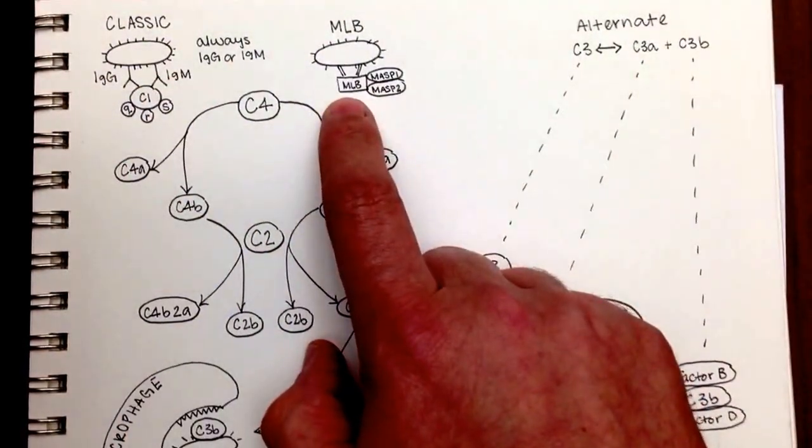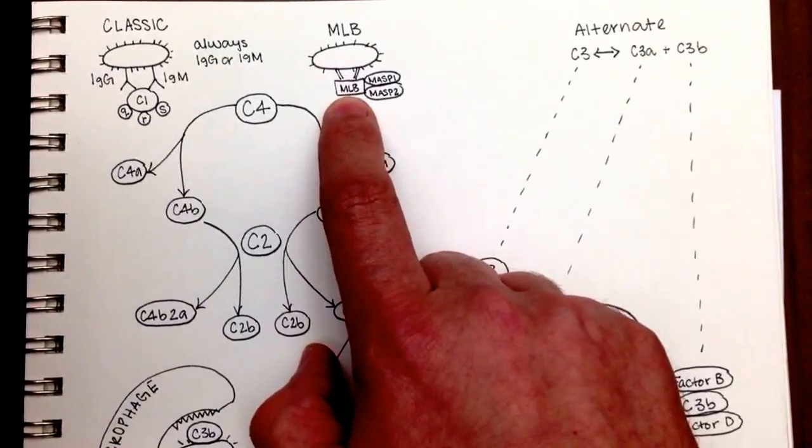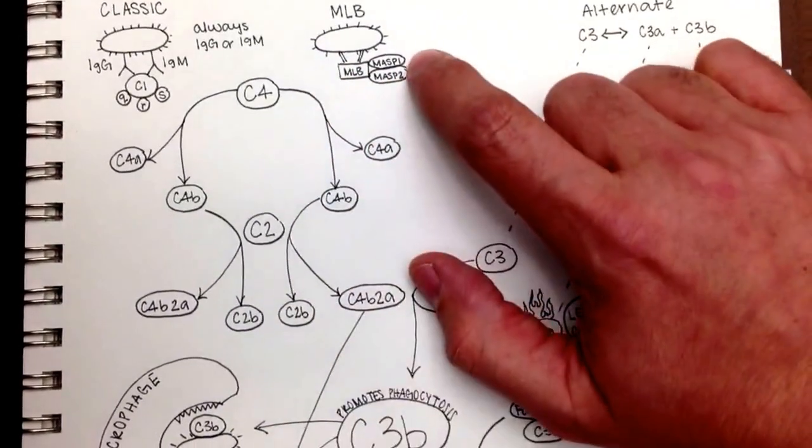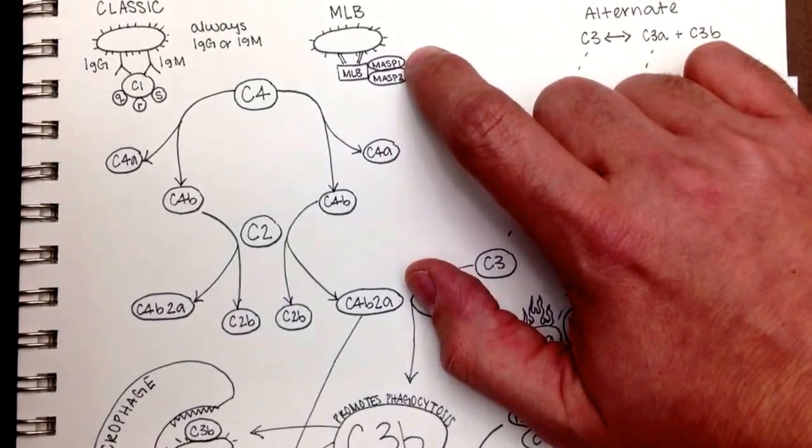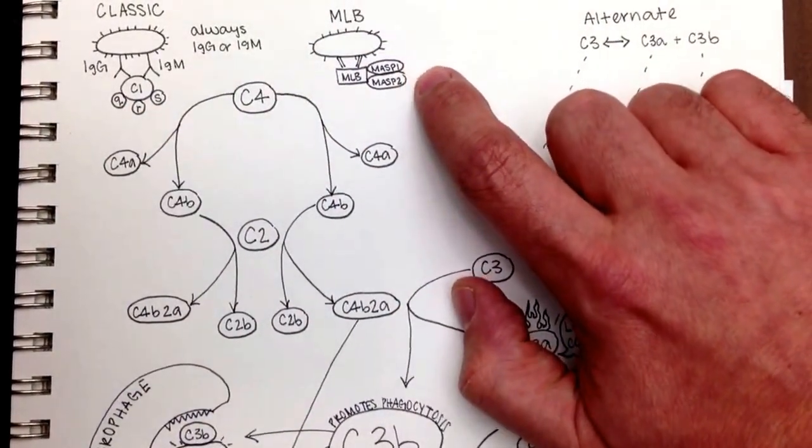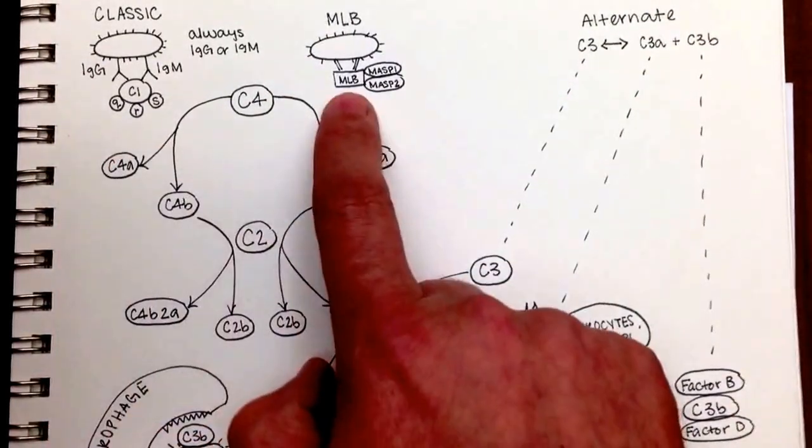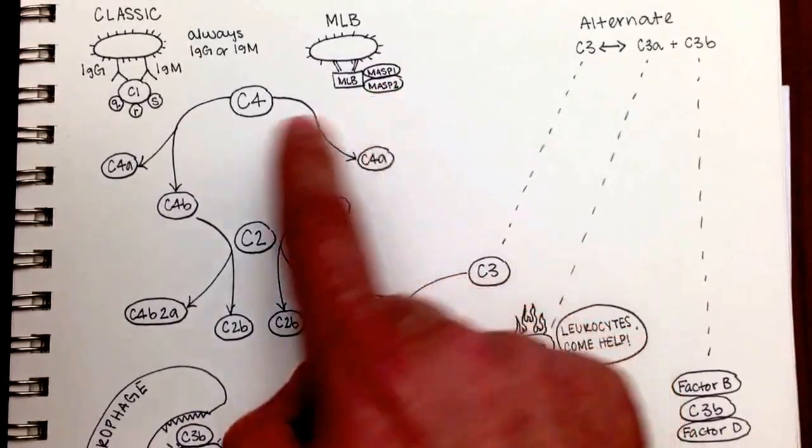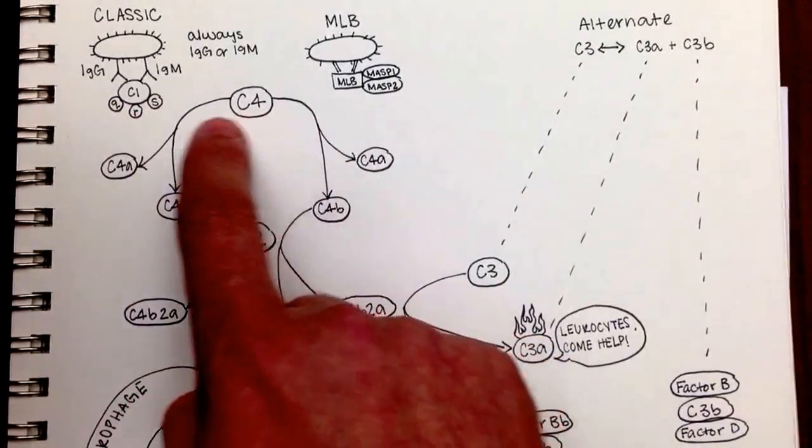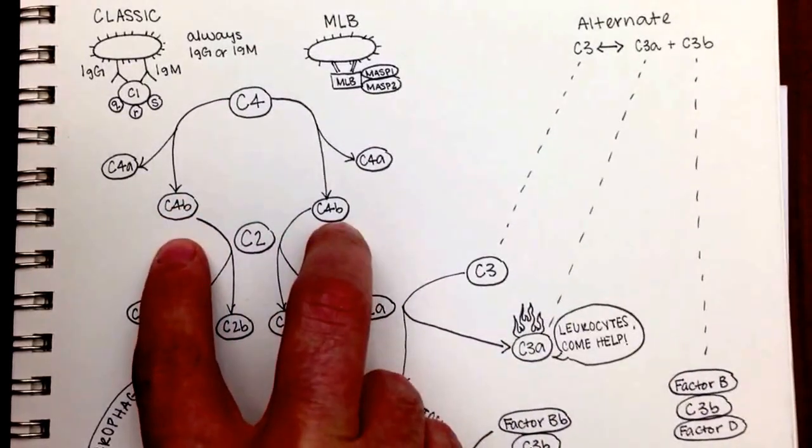Another way that we could start would be this mannose-lectin binding molecule here is bound to the mannose-lectin, and it has two helpers. Instead of QRS, it has MSP1 and MSP2. And they serve the same function as this C1QRS. The mannose-lectin binding and the MSP1 and 2 break C4 into C4a and C4b. So you can see that both of these are initiating the same pathway. And they both get you to C4b.